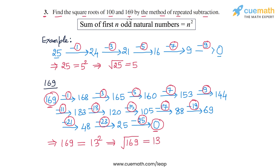That completes the second part — the square root of 169, found by the method of repeated subtraction, is equal to 13. This completes question number 3.